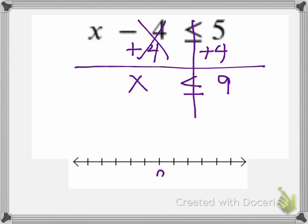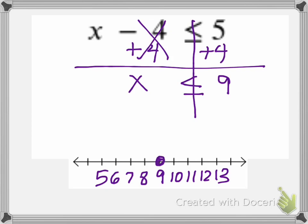So I've got 9 in the center. If I go this way — 8, 7, 6, 5 — I can go on the other side of 9 as well. So if I graph less than or equal to 9, I've got to put a closed circle on 9 and shade everything to the left. That means any number to the left of 9 on the number line will satisfy this inequality.